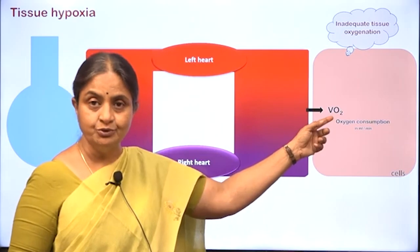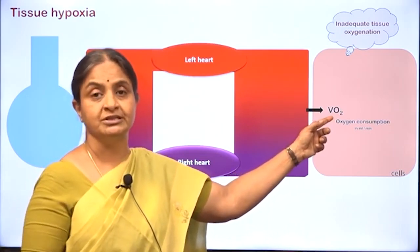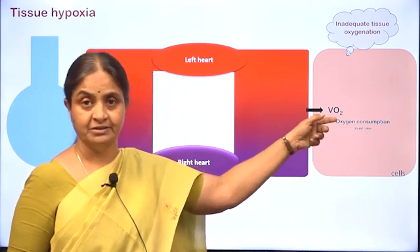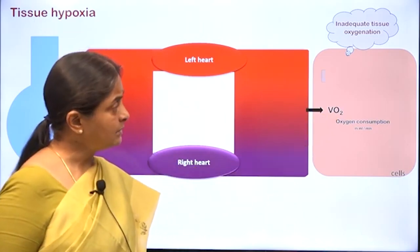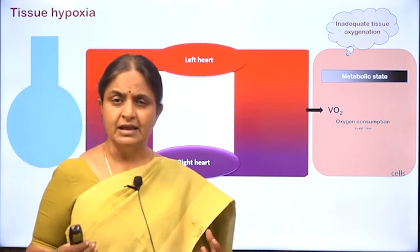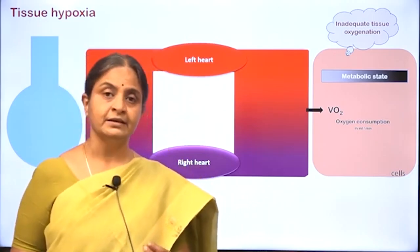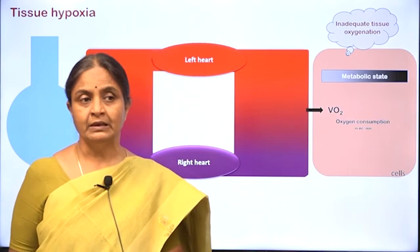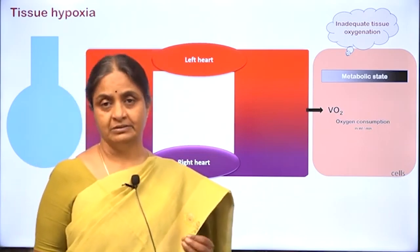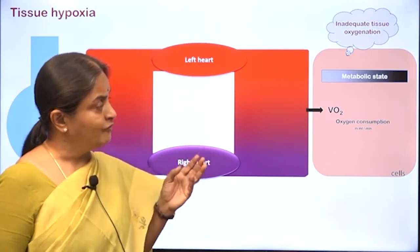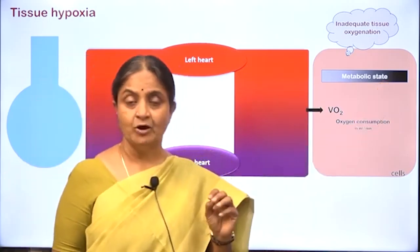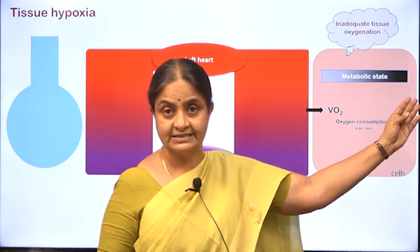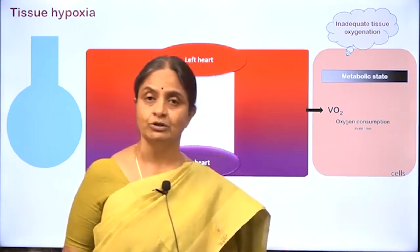VO2 is the notation used to refer to the amount of oxygen consumed by tissues in milliliters of oxygen per minute. We cannot put a single number to define tissue hypoxia because VO2 varies with the metabolic state. Oxygen consumption is lower in resting conditions, and as metabolism increases during exercise, oxygen consumption will also increase.